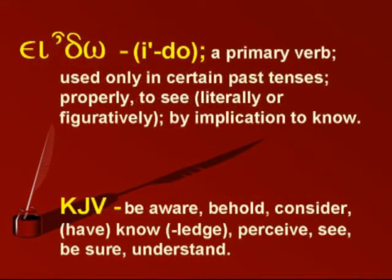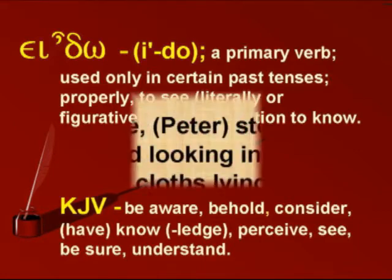In verse 8, when we read that John saw and believed, the Greek word there is 'idio,' and it has a stronger meaning — more than perceive, it means to be sure or to understand something. The little light bulb went off in his head. Now John understood what had happened.